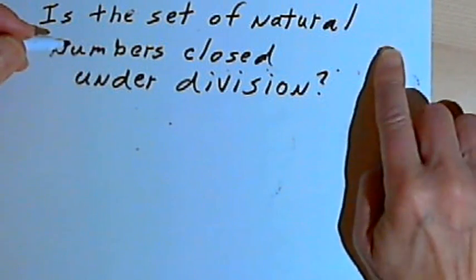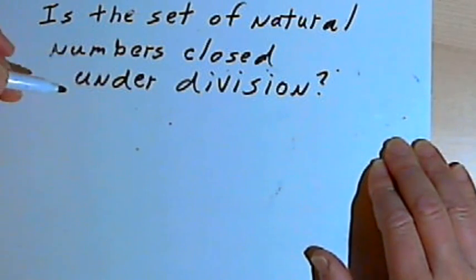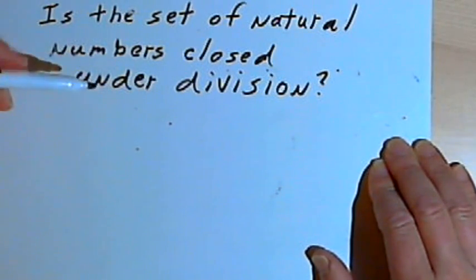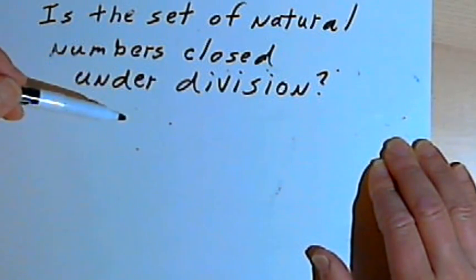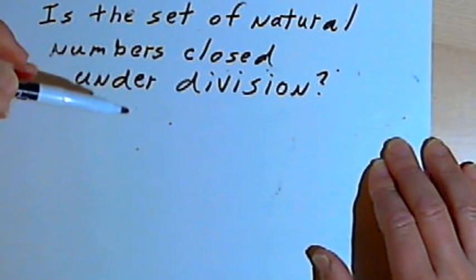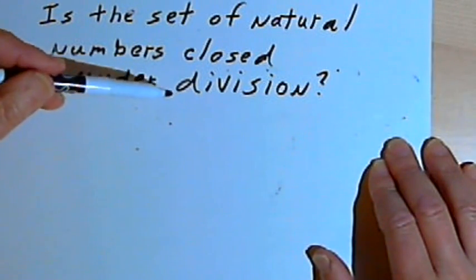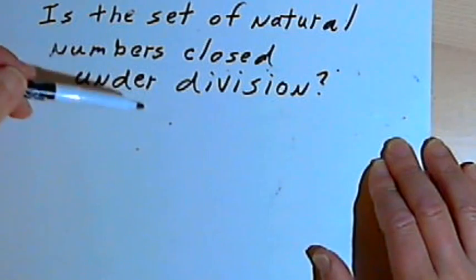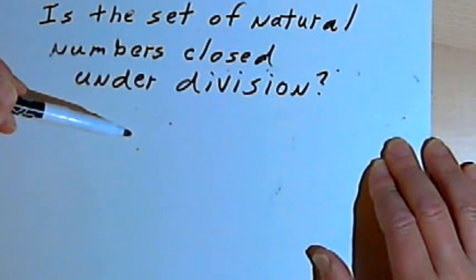And if we think of division as repeated subtraction, and we know subtraction is not closed, it seems like there's a good chance that division won't be closed either. And basically, at this point, all I have to do is find one example where I don't end up with a natural number when I do division.